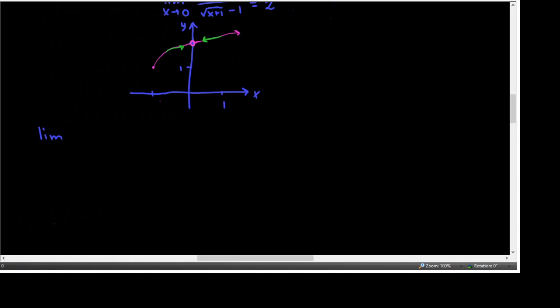Next we're supposed to take the limit as x approaches 0 of the absolute value of x divided by x, and show that it does not exist. We'll get 'does not exist' as an answer for a limit question enough that I want to introduce a symbol right now — not much of a symbol, it's actually three letters. Capital D, capital N, capital E — DNE — stands for 'does not exist,' and we'll use that abbreviation quite a bit.